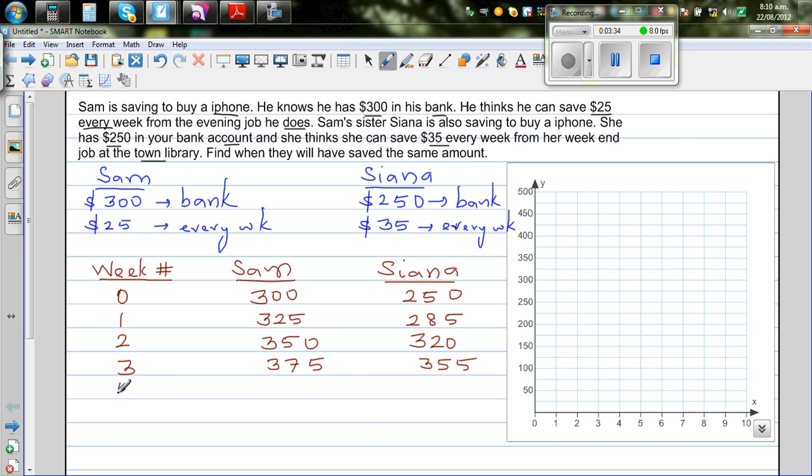The fourth week, Sam will have $400. Sienna has $355 plus $35, which is $390. And the fifth week, he has $425 and this is $425. So this is one way of doing it. You can do it by making up a table. So the fifth week, they have saved the same amount.